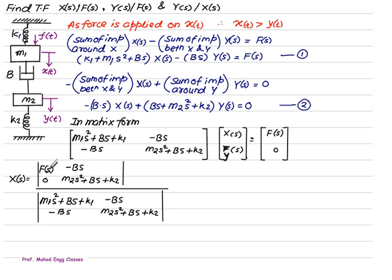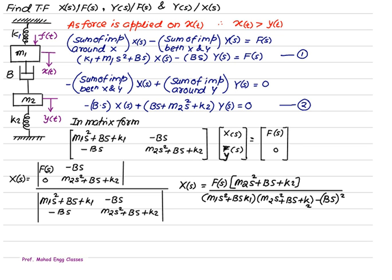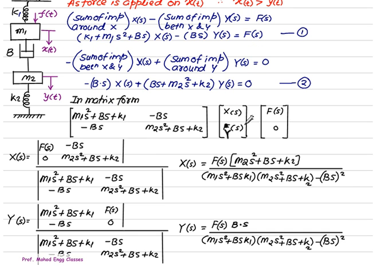Solving the numerator: f(s) multiplied by (m2s² + bs + k2) plus 0. For the denominator, it is (m1s² + bs + k1)(m2s² + bs + k2) minus (-bs)(-bs), which equals (m1s² + bs + k1)(m2s² + bs + k2) minus (bs)². For y(s), since it is the second column, we replace column 2 with [f(s); 0], keeping column 1 as is, and the denominator remains the same determinant. Solving gives the first term as 0 and the second term as f(s)·bs (minus times minus becomes plus).